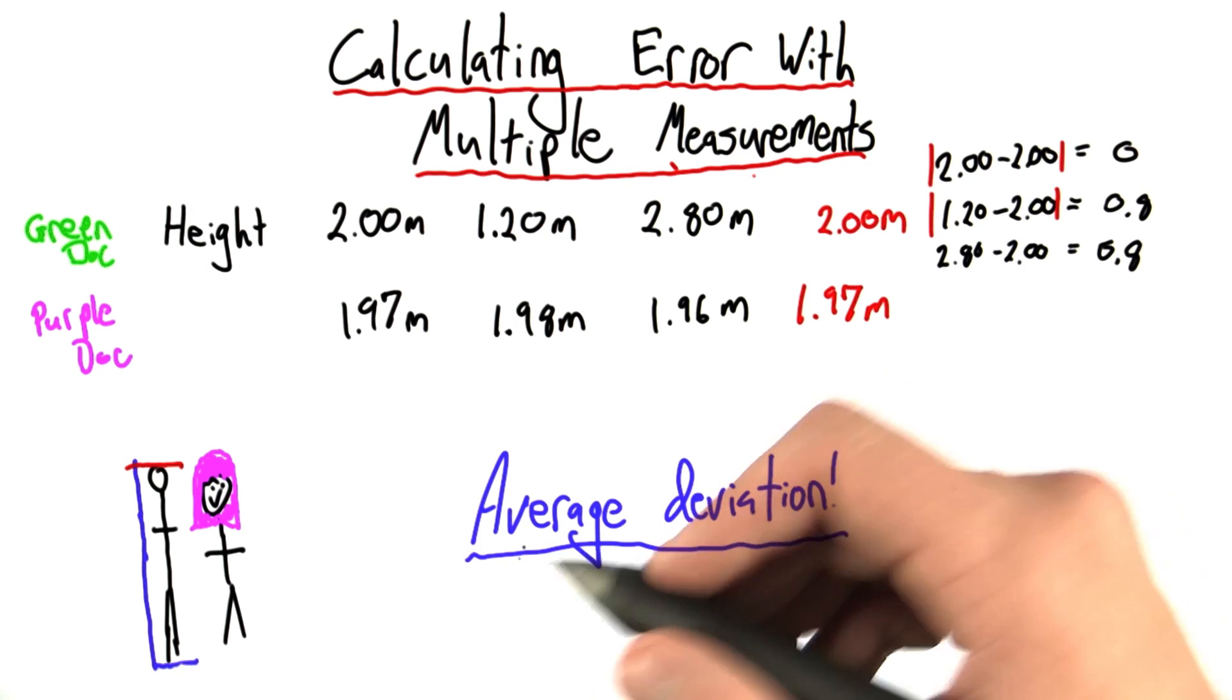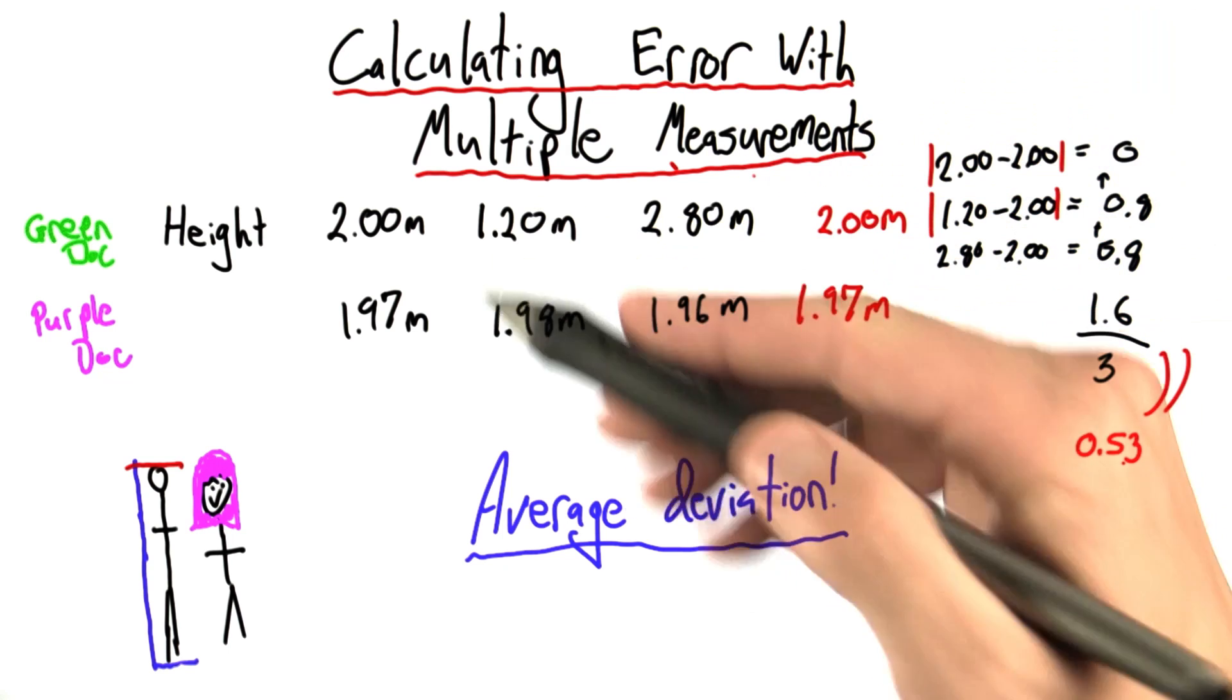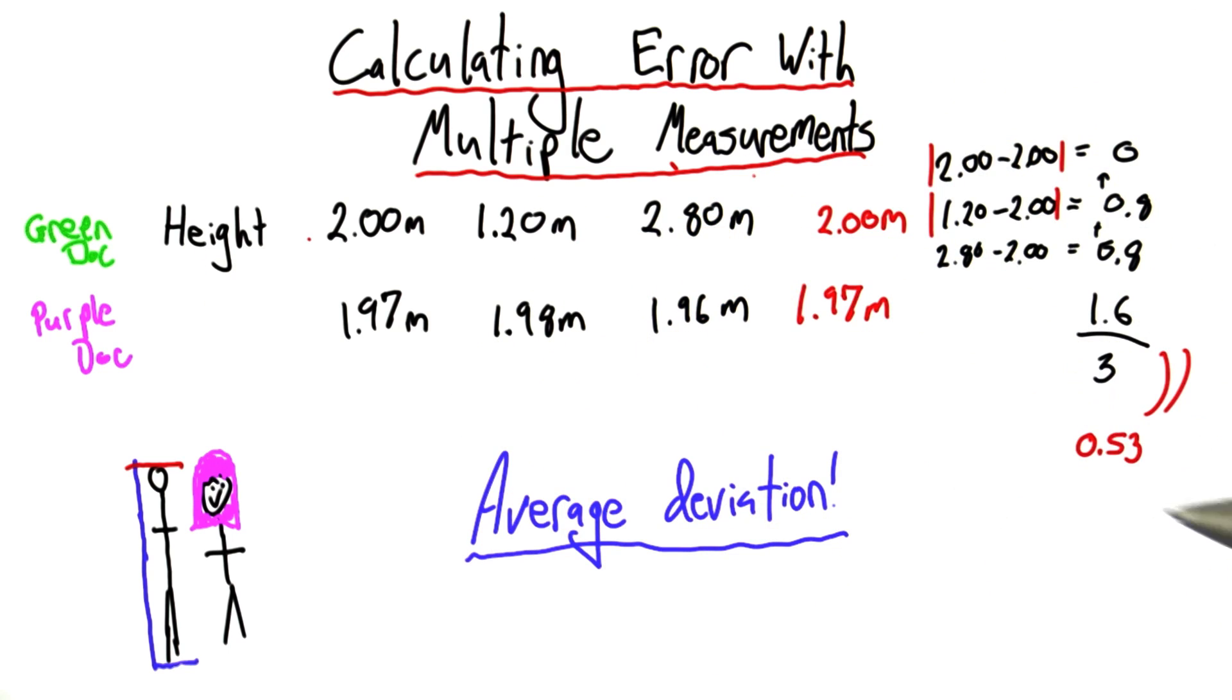Well, we know how to do an average. We take the sum, 0 plus 0.8 plus 0.8 gives me 1.6, and we divide by the number of data points, so 1.6 divided by 3 is equal to about 0.53. So the average deviation for this first doctor was 0.53, and that unit there is meters.